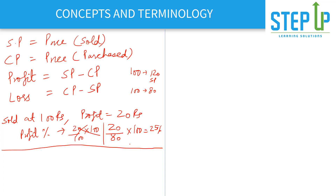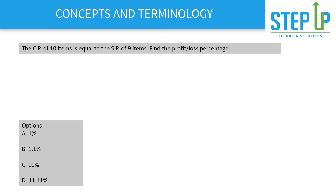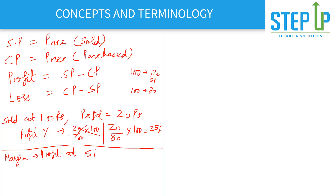A slightly different concept, which is rarely asked, is margin. Margin is your profit realized at your selling price — meaning profit percentage in terms of selling price. That covers the basic terminology.